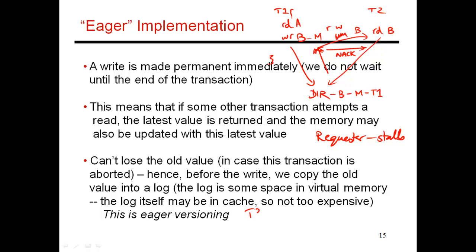Now let's take a case where transaction T3 wants to do a write to B. When it wants to do a write to B, it first contacts the directory. Now B is in shared state with transaction T2. So when the directory receives a write request from T3, it says there are other sharers of this block, so it needs to first invalidate those blocks. It sends an invalidation message to transaction T2. This block is in shared state - its read bit is set. Transaction T2 says yes it has a copy of B, but this is something it read within a transaction that is not yet finished. So again, this is a case of a conflict - two different threads trying to read and write B - and the conflict is detected as soon as it happens.